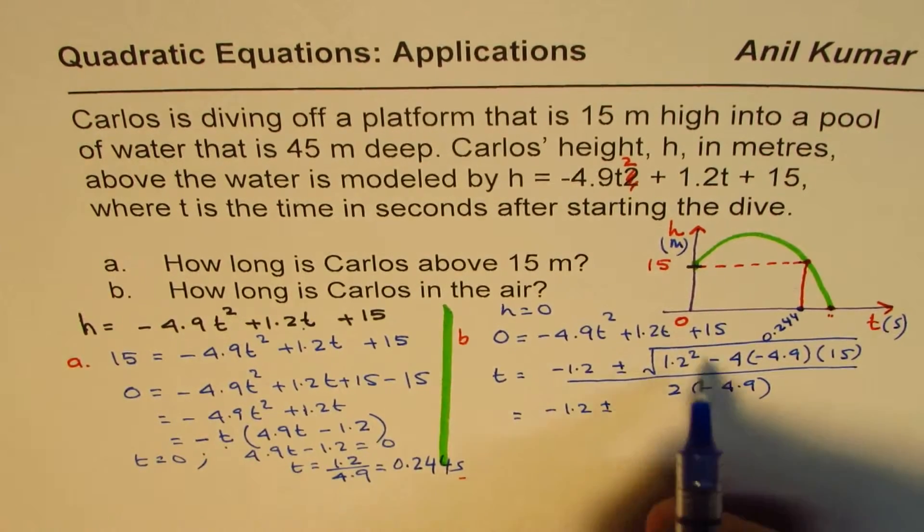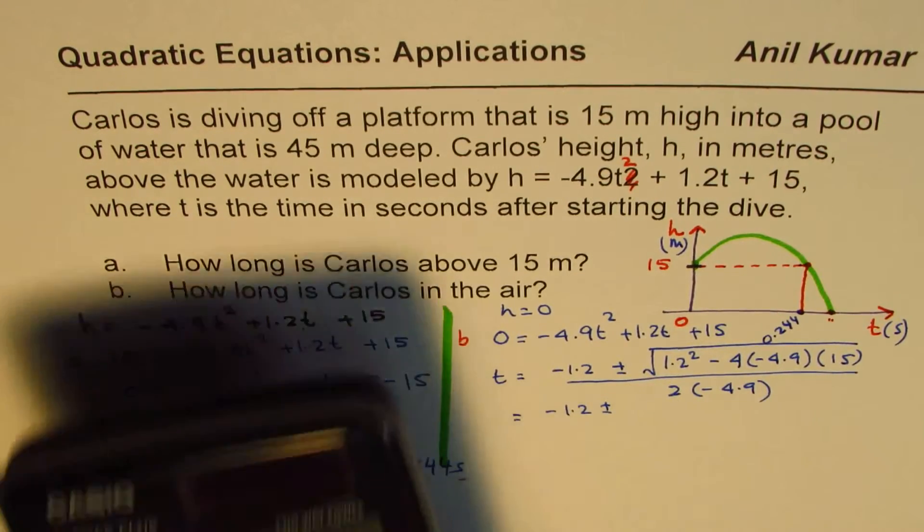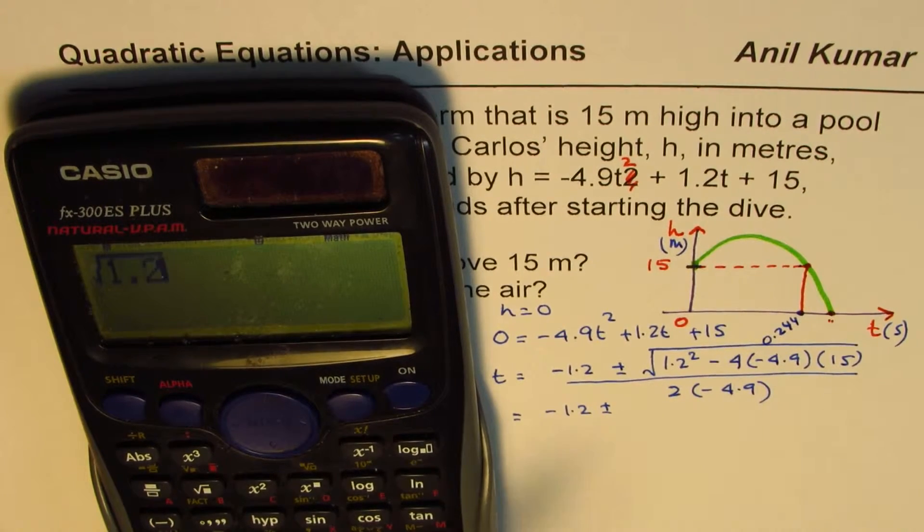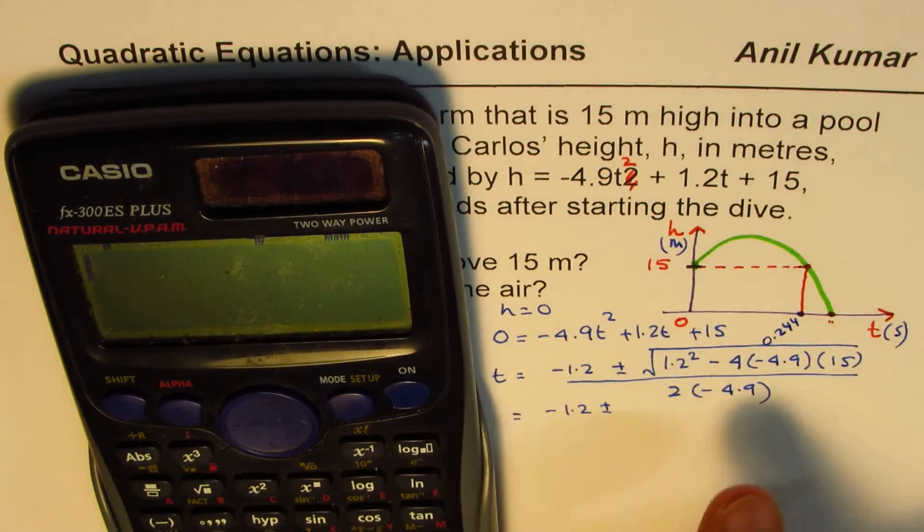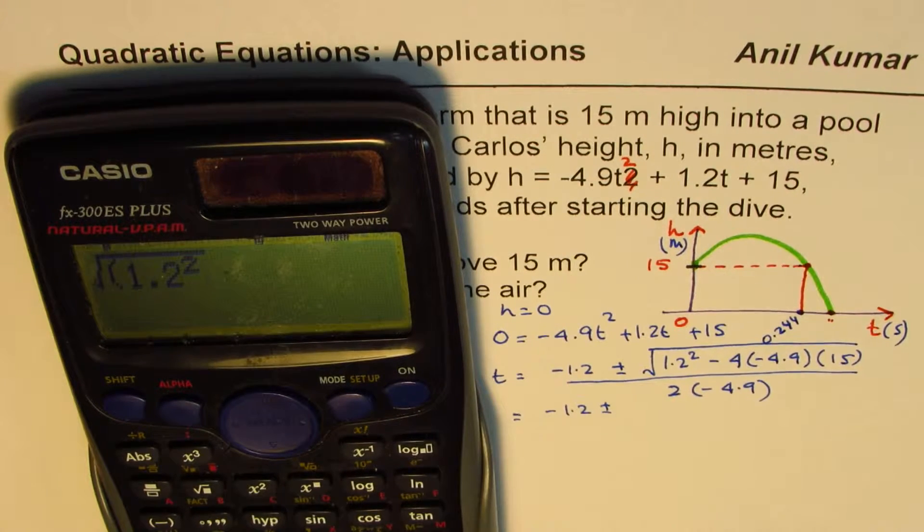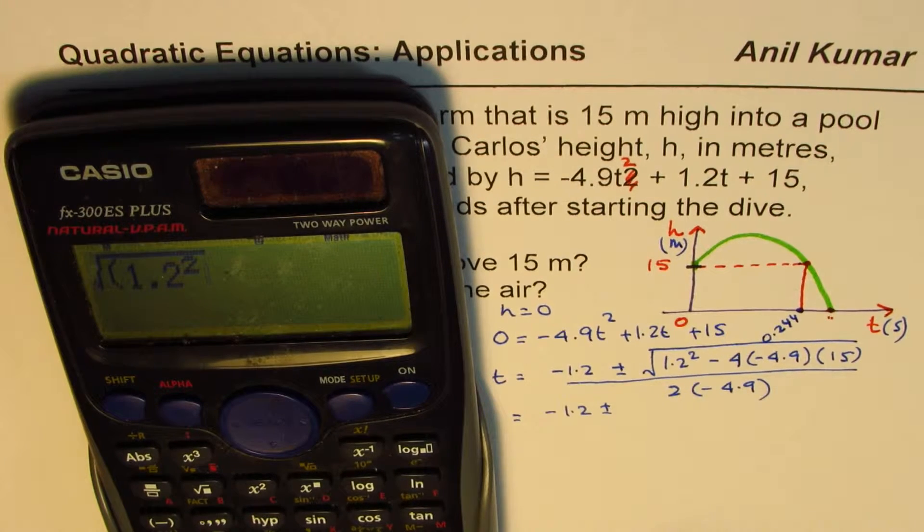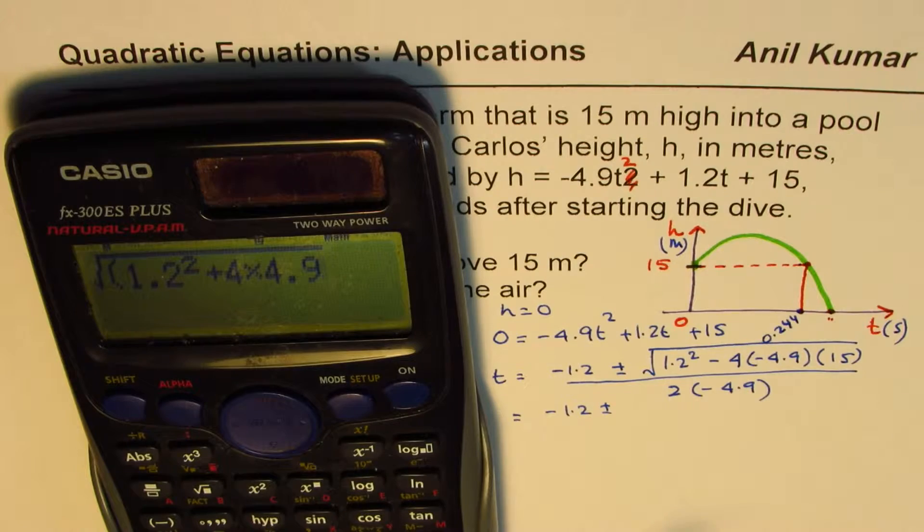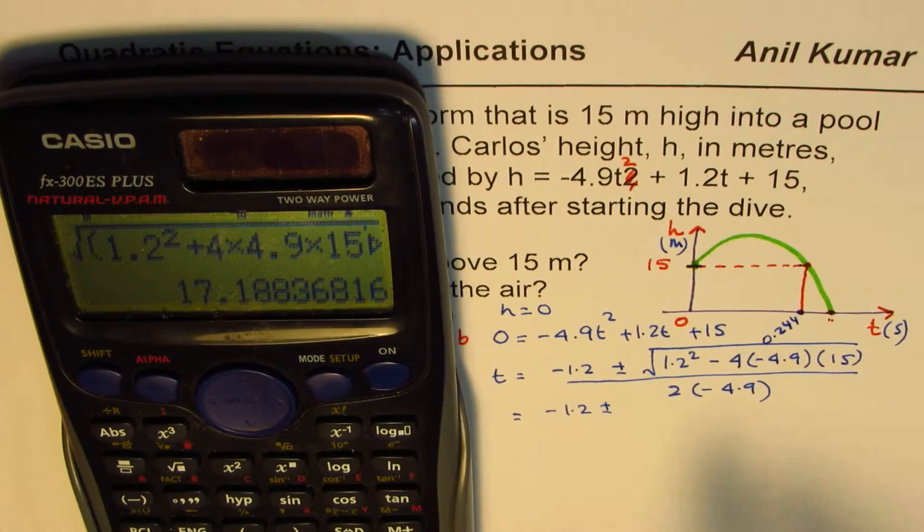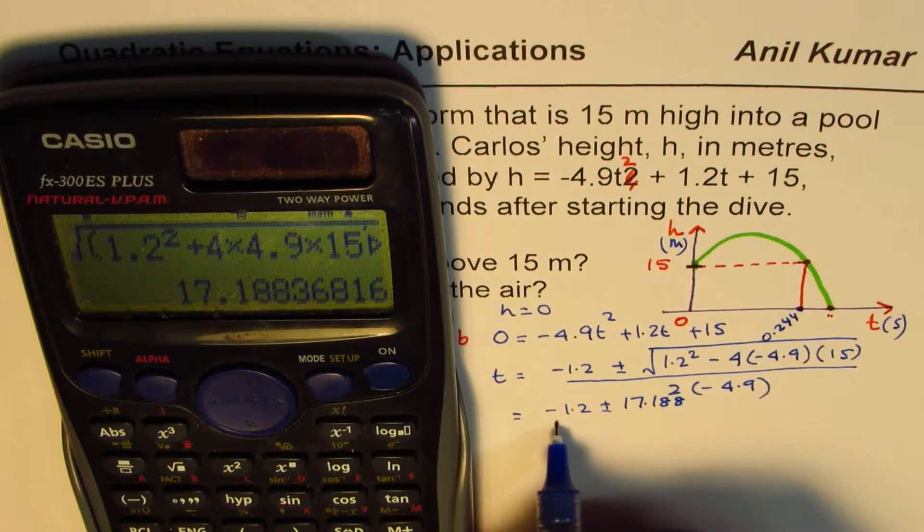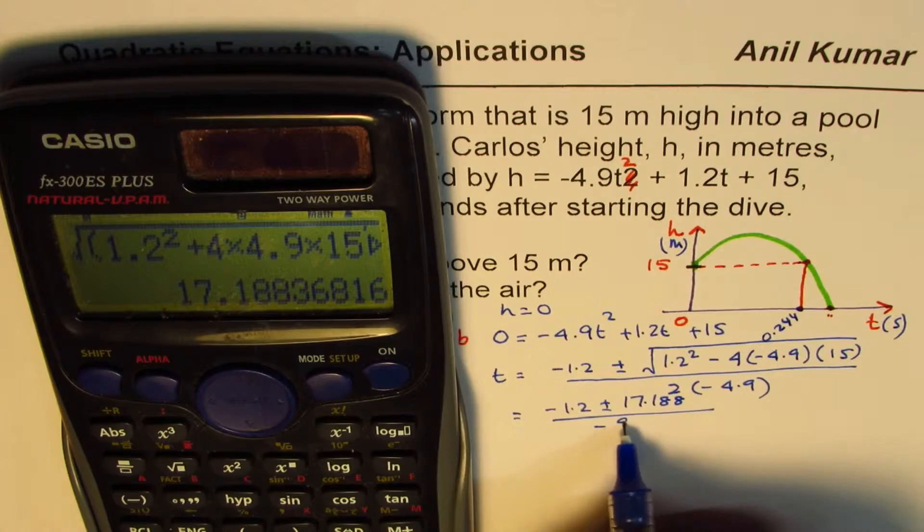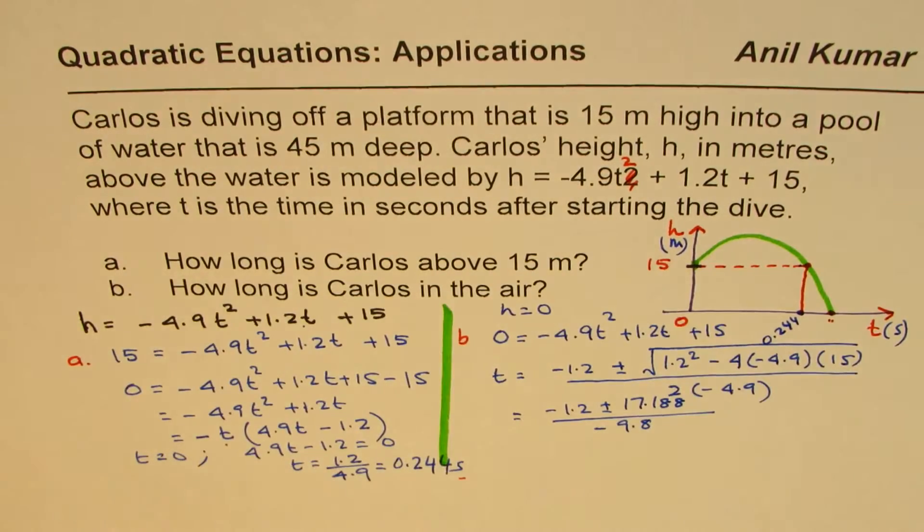Let's find the square root thing first. It's always good. It is square root within brackets. It's good to put it in brackets. Sometimes calculator may do a mistake. Minus minus becomes plus. So I'm writing plus here, 4 times 4.9 times 15, bracket close. Let's go outside the square root. So we get 17.188. Let's keep two decimal places. And here we get minus 9.8. I'm just multiplying 2 times 4.9.